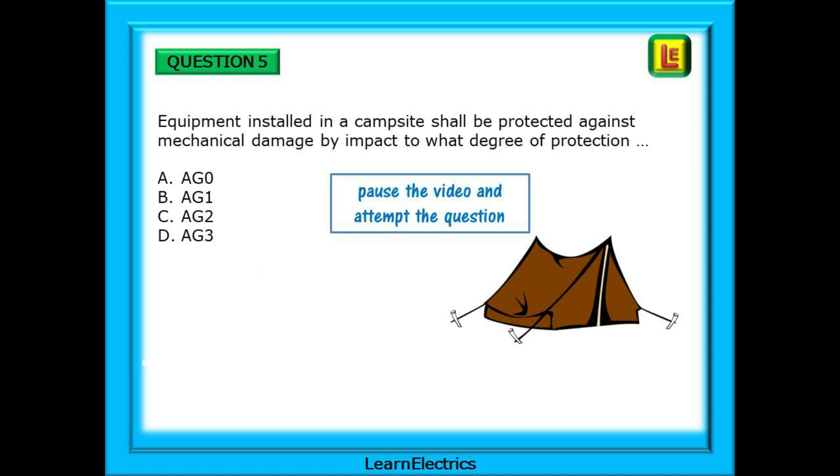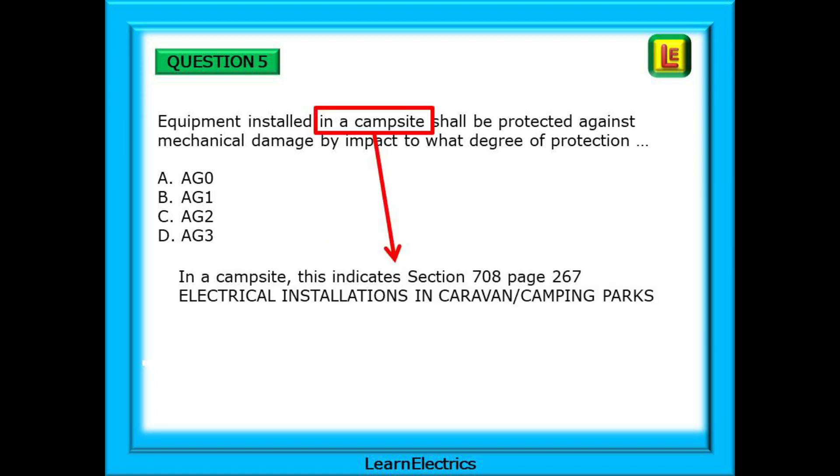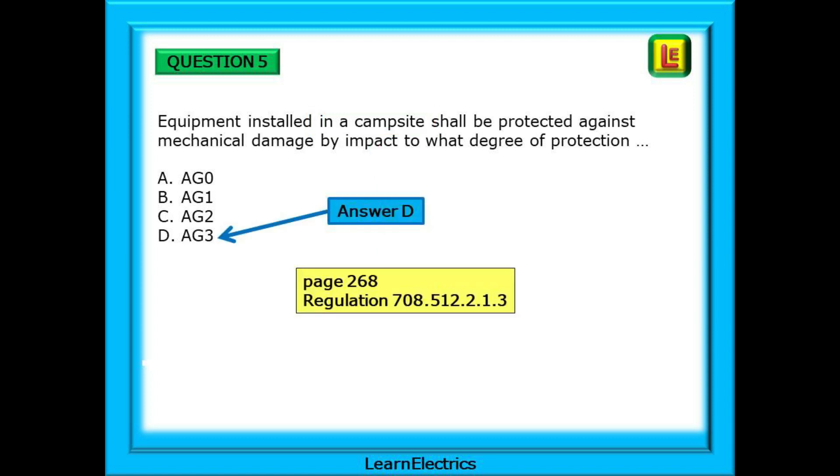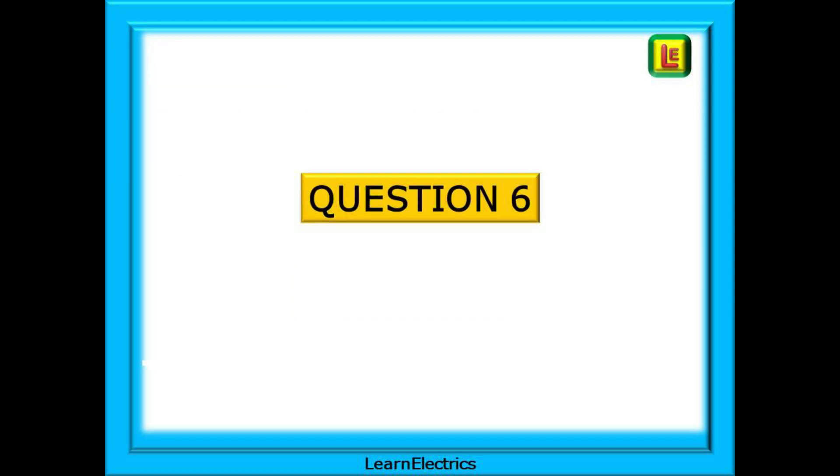Question 5 is next: Equipment installed in a campsite shall be protected against mechanical damage by impact to what degree of protection? Pause the video and have a go yourself. In a campsite, this indicates section 708 on page 267, Electrical installations in caravan and camping parks. So go there now. On page 268 you will find Regulation 708.512.2.1.3 and you should choose Answer D, AG 3.